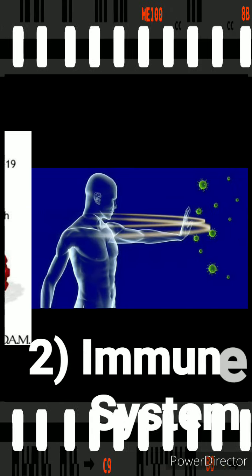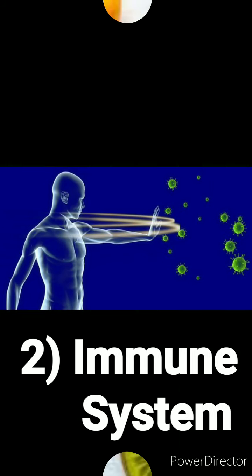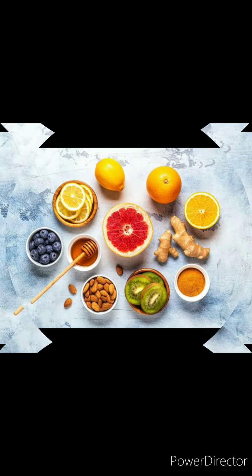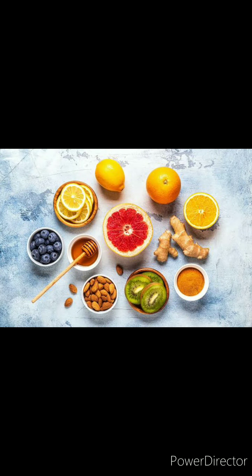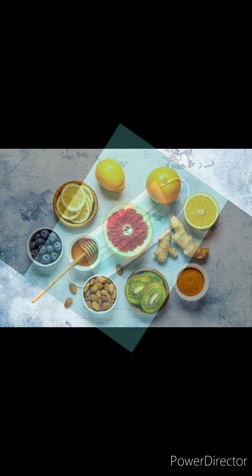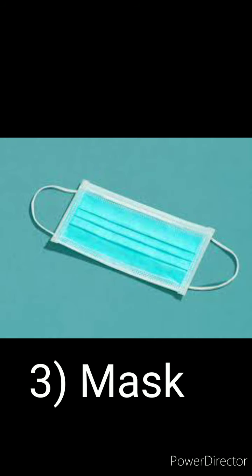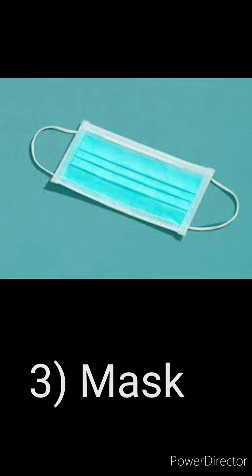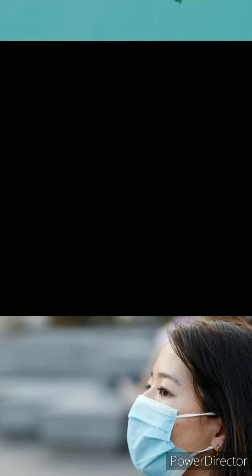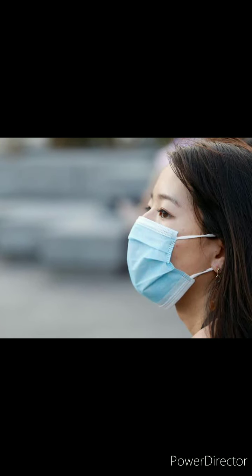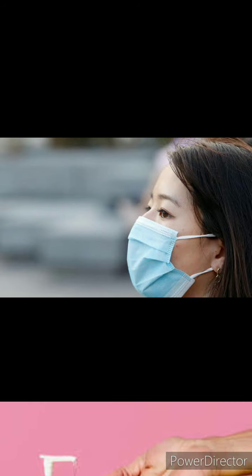The second word is immune system. These are the foods which will help you to improve your immune system. Next word is mask. Masks we basically use to avoid infection while interacting with other people.